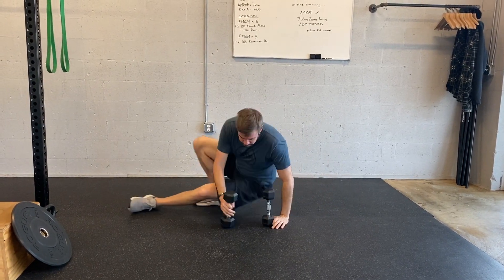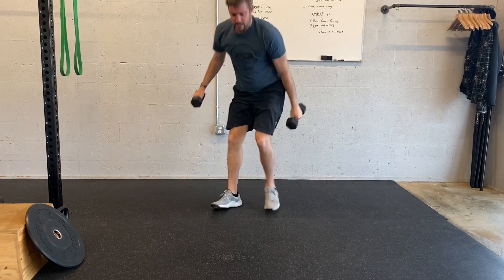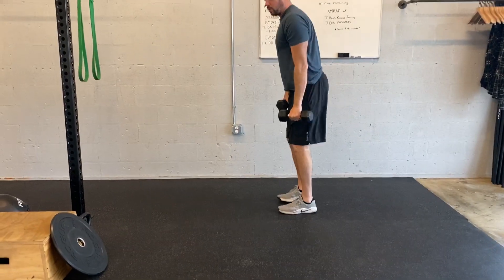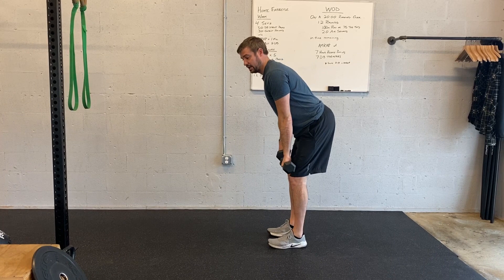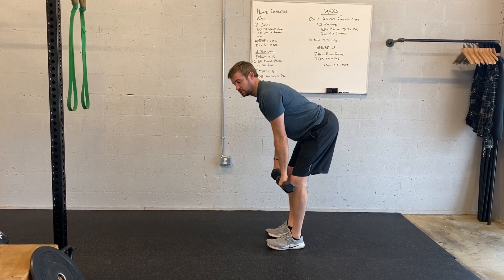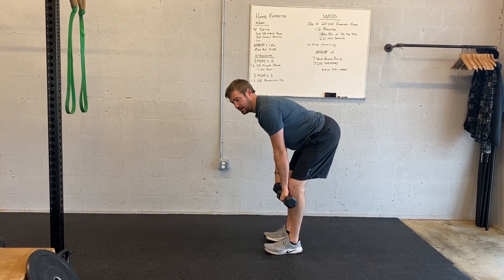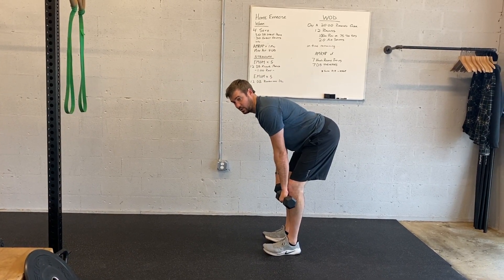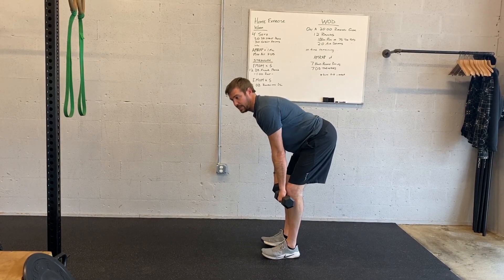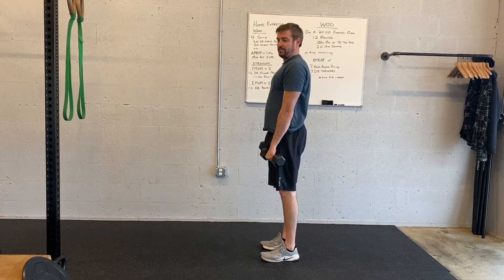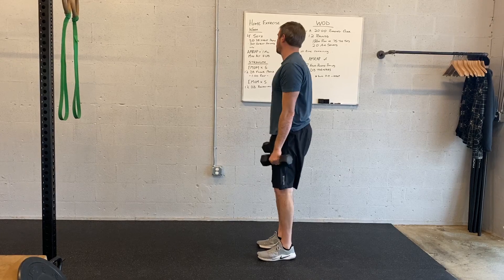The Romanian deadlift is more in front of the body — shins vertical, hinge down, limited by hamstring or spine flexibility or just control, and then back up. Hinge, back up.